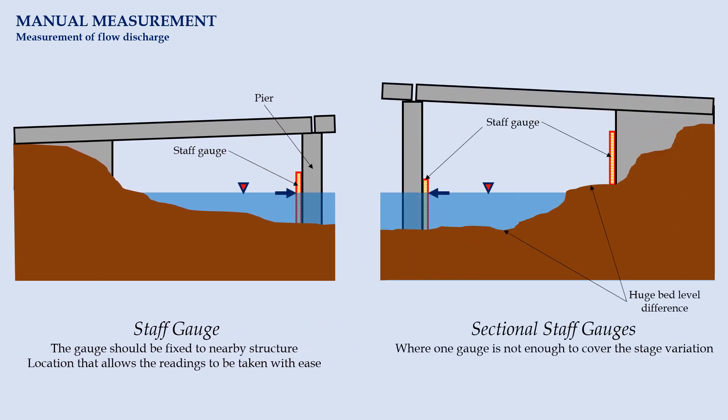When it is impossible to capture the entire variation of water surface elevation using only one staff gauge, we may need to place multiple gauges at different locations. The presence of stream bed with huge level difference from one part to another is one of the reasons for this to occur. The stream needs to be divided into sections of consistent bed level, and then one gauge is provided for each of them.